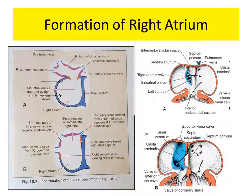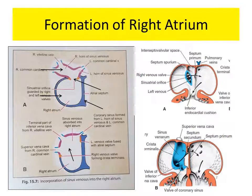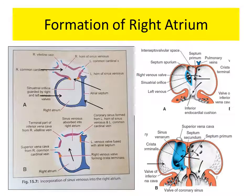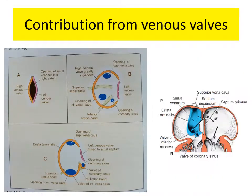This is the primitive atrium. This is the sinus venosus. These are the venous valves. There is formation of the interatrial septum which divides the primitive atrium into right and the left half. The sinus venosus gets absorbed into the right half of the primitive atrium to form the right atrium. The blue colored portion is the part of the right atrium formed from the absorbed sinus venosus, and the white colored part is formed from the right half of the primitive atrium. The venous valve has a right part and a left part, and at the cranial end they join together to form the septum spurium.